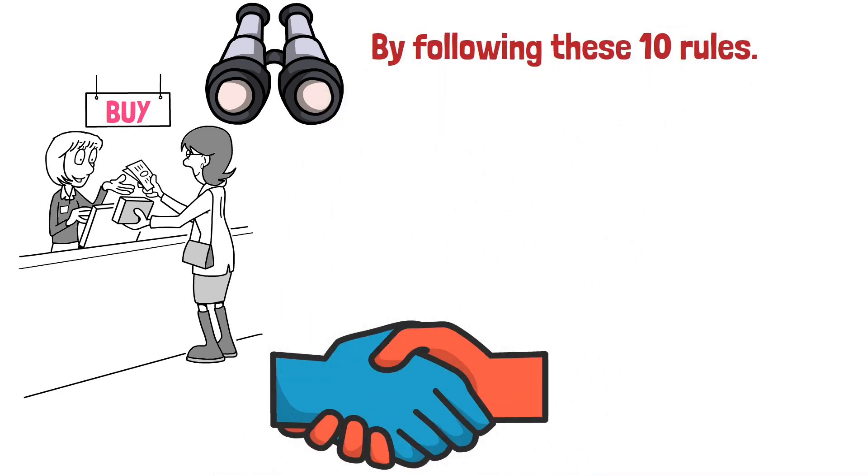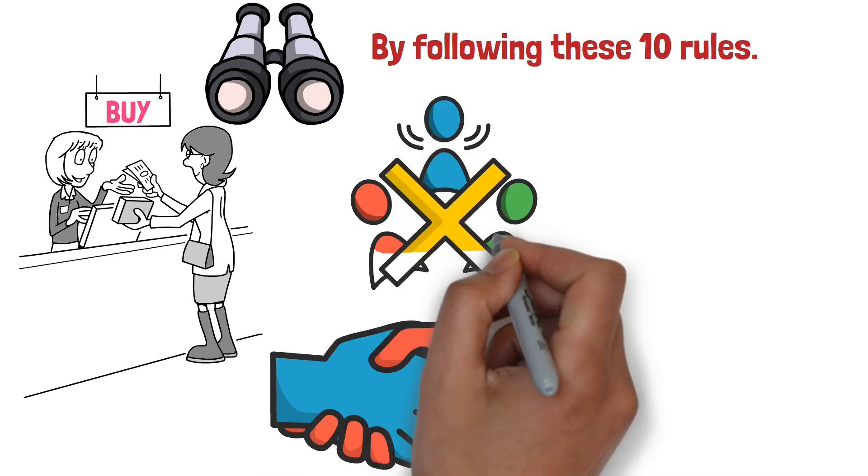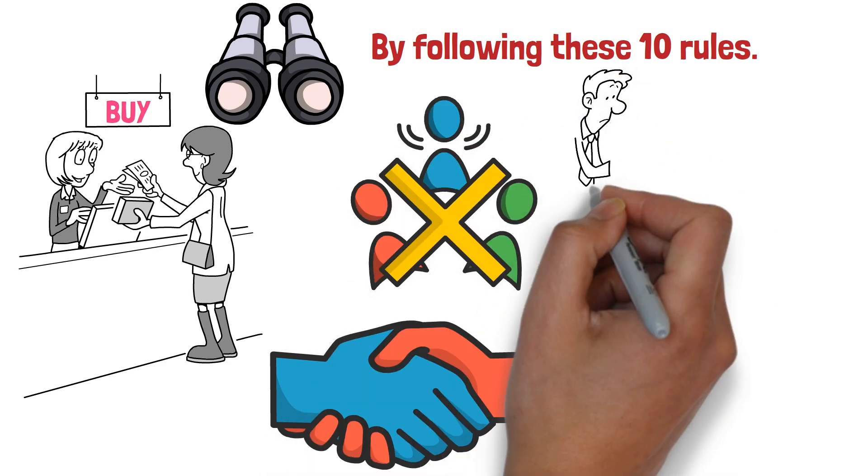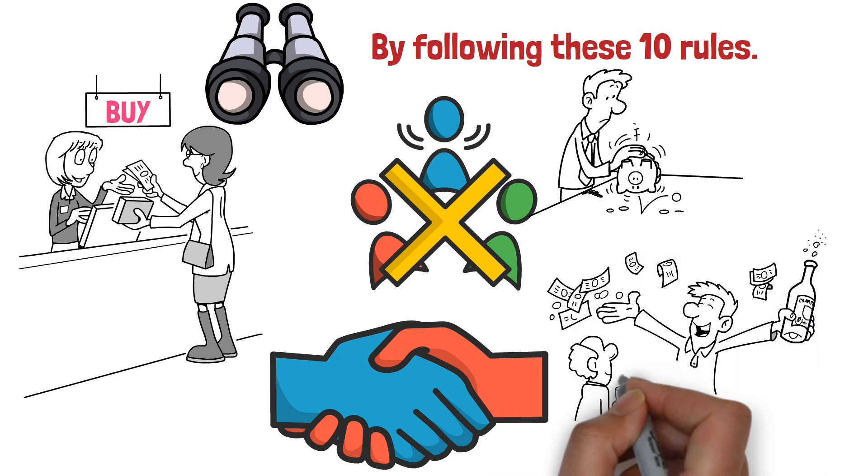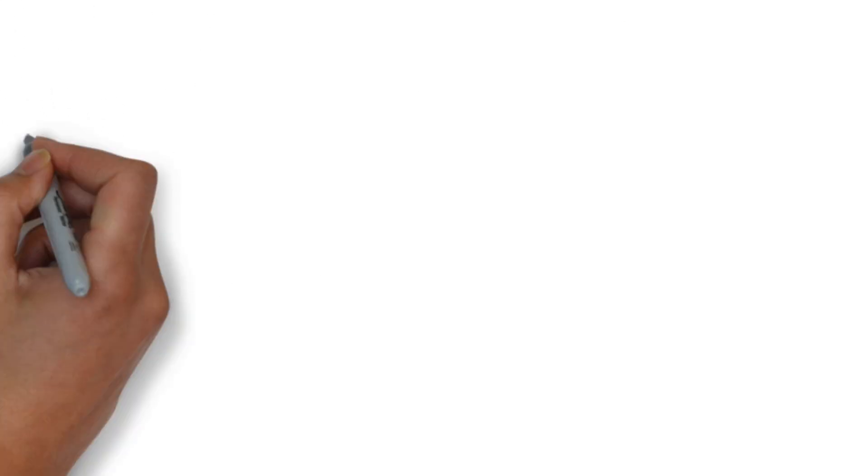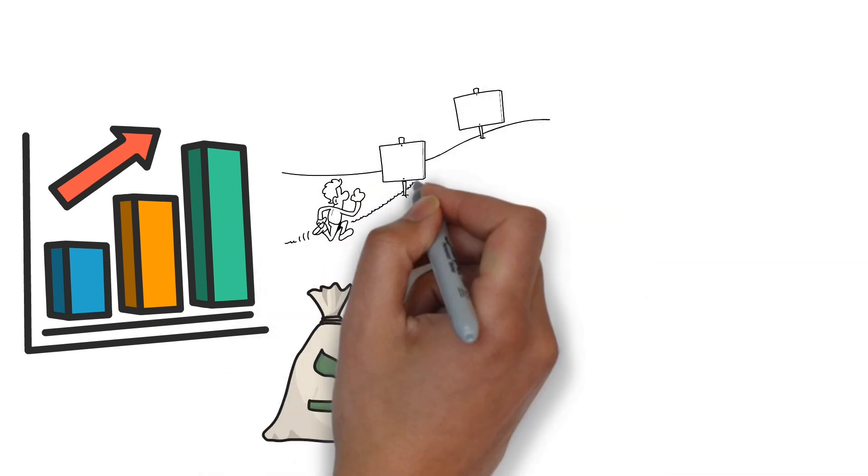By following these 10 rules, you can avoid the money habits that are keeping you broke and poor, and you can start building a brighter financial future for yourself and your family. Remember, the key to financial success is not about making quick gains or getting rich quick schemes. It's about making sound financial decisions that will lead to long-term prosperity.